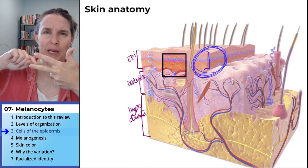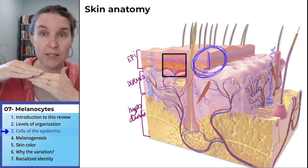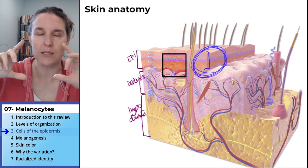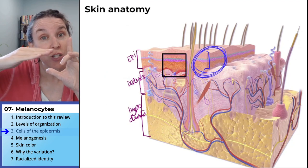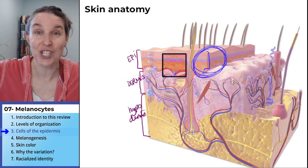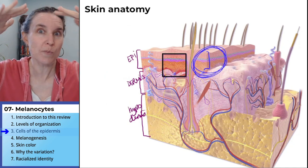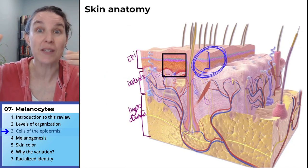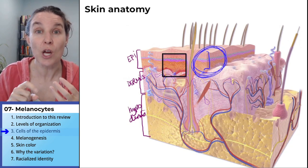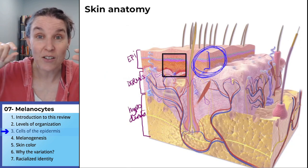Let me break that down for you just a little bit. Stratified means the tissue itself has multiple layers — we're going to see that really clearly when we look. We're going to zoom in on where the box is in this picture. So stratified tissues have many layers. Squamous describes the shape of the cell at the top of the tissue — the most superficial cells. Squamous means that the cells on top are flat.